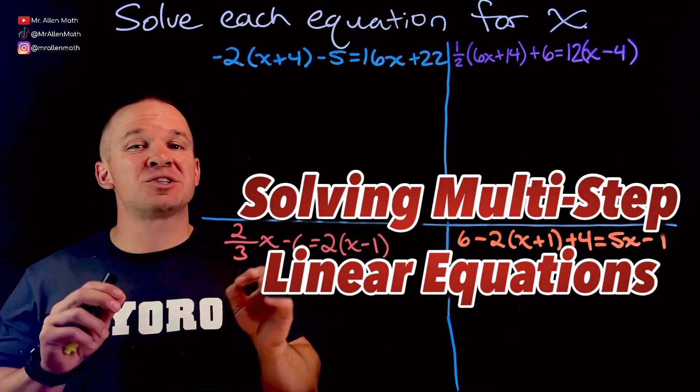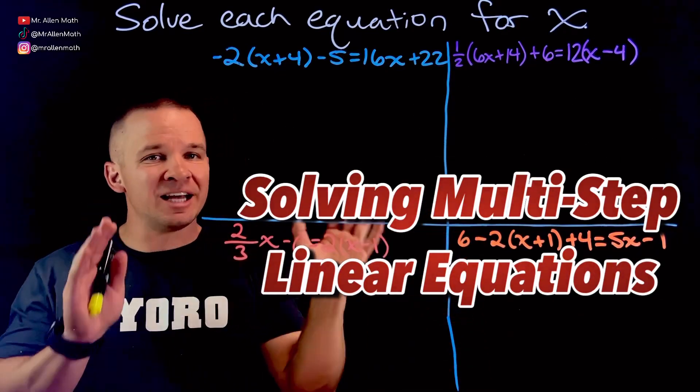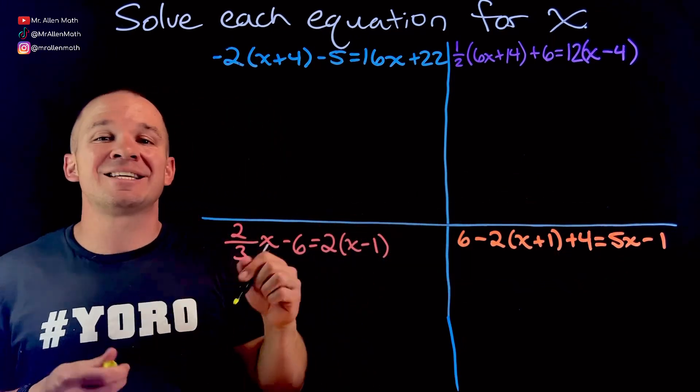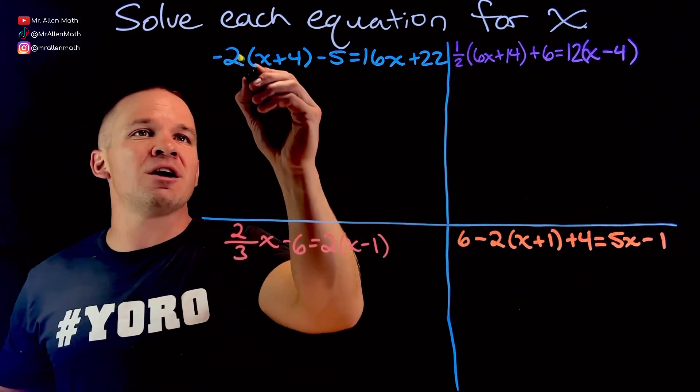What's poppin' dogs? Mr. Allen here with some solving of multi-step linear equations. Here we got fractions, we got negatives. It's a lot going on here, so let's get started.